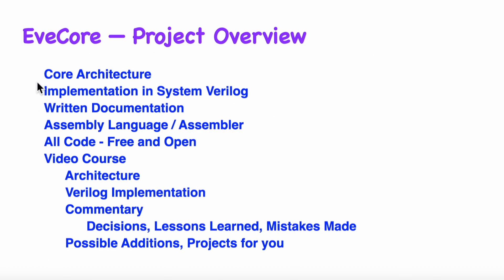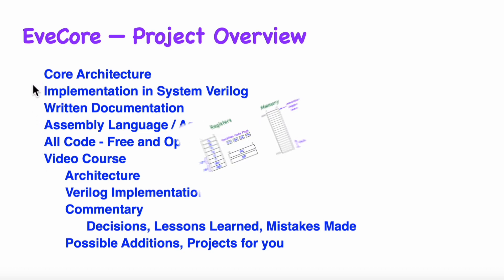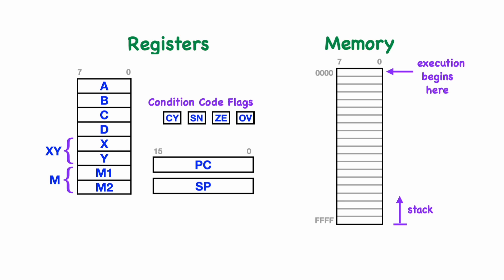The project includes the EVE Core instruction set architecture, the System Verilog implementation, a bunch of written documents, the EVE Core assembly language and an assembler, and the videos. EVE Core is fundamentally an 8-bit architecture. There are 8 registers of 8 bits each. The A register is a bit special and many of the operations act just on the A or accumulator register. The program counter and the stack pointer are 16 bits in length, which accommodates a memory size of up to 64 kilobytes.